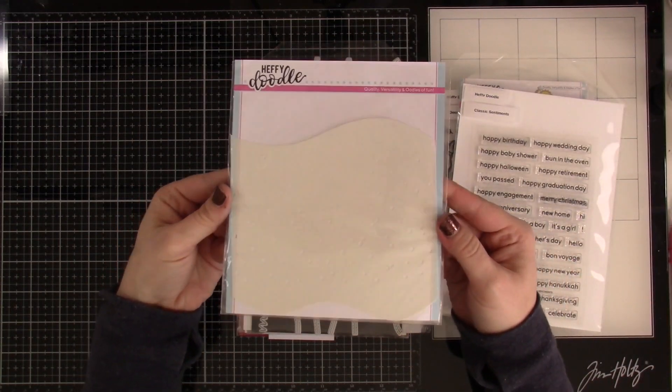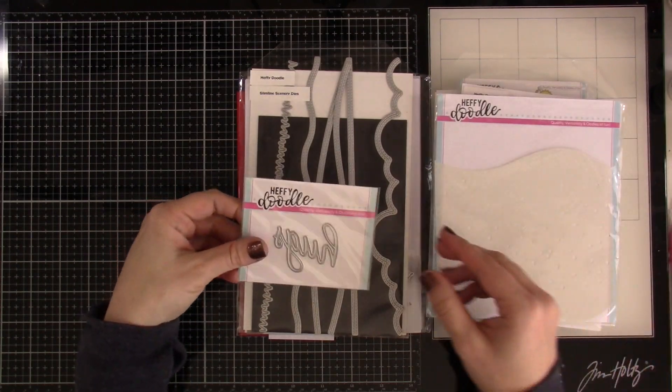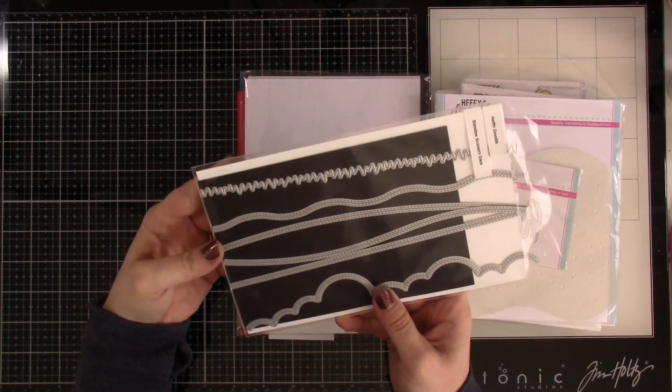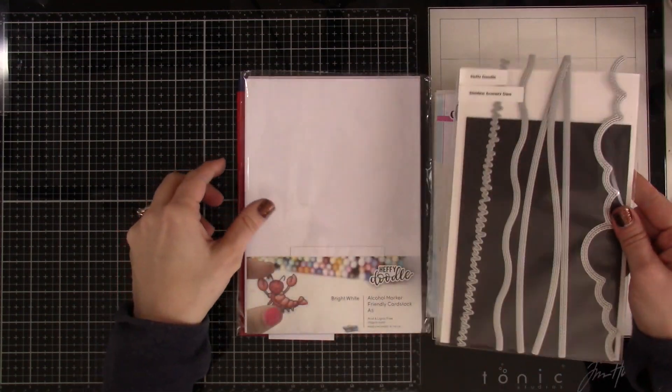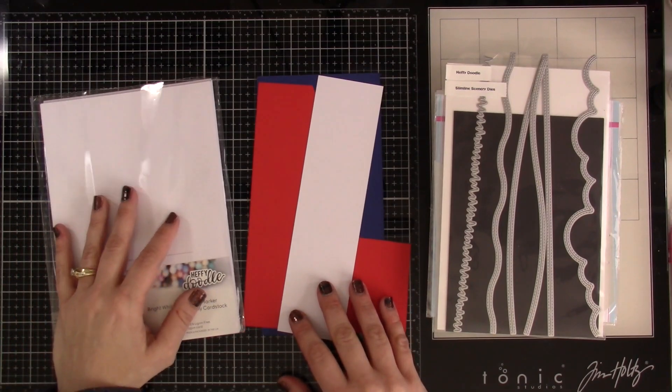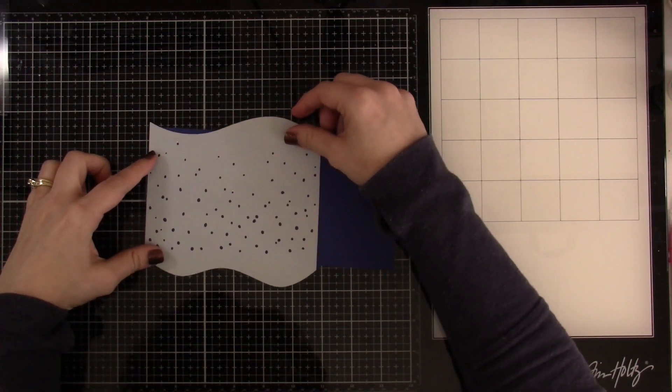We have our First Snow Stencil and I have our Hugs Heffy Cuts along with our Slimline Scenery Dies. We have some Alcohol Marker Friendly cardstock and various Heffy Doodle cardstock as well. So let's jump into it.